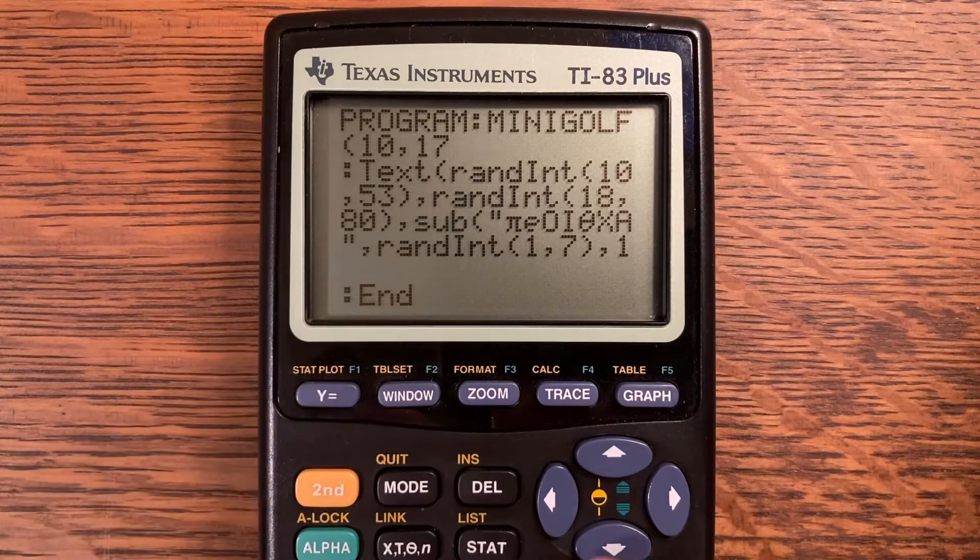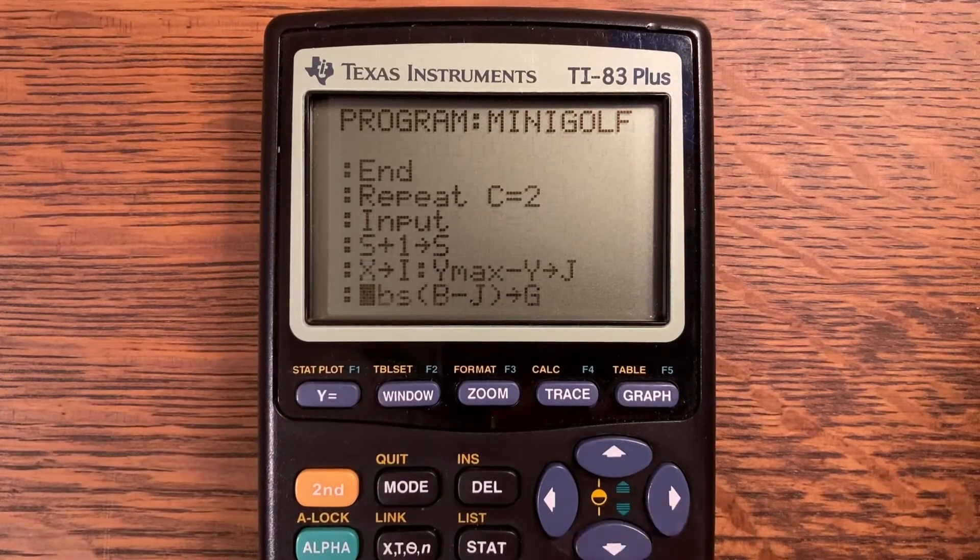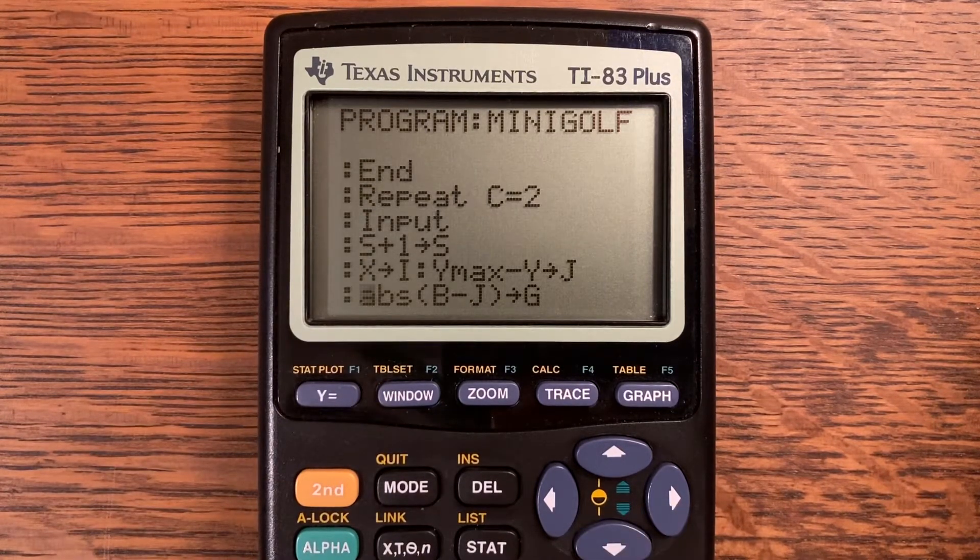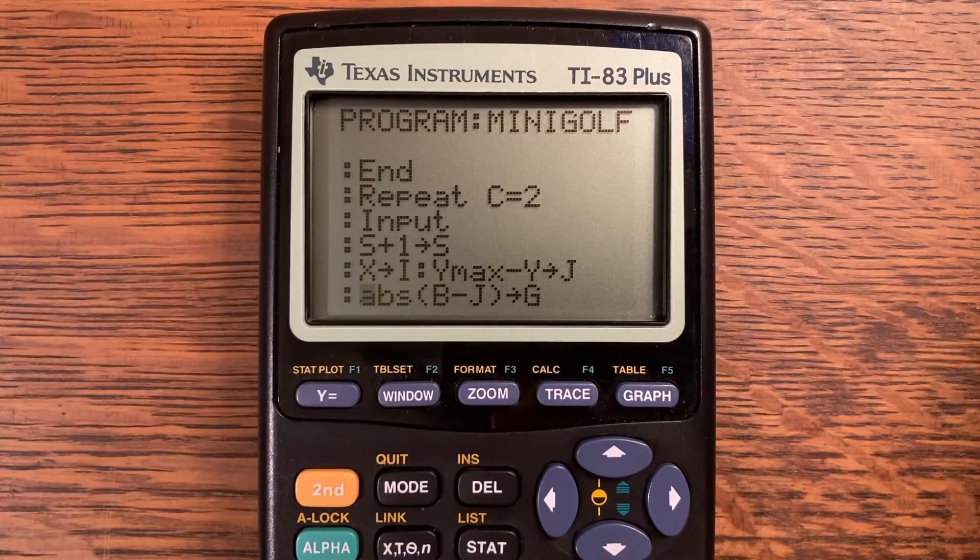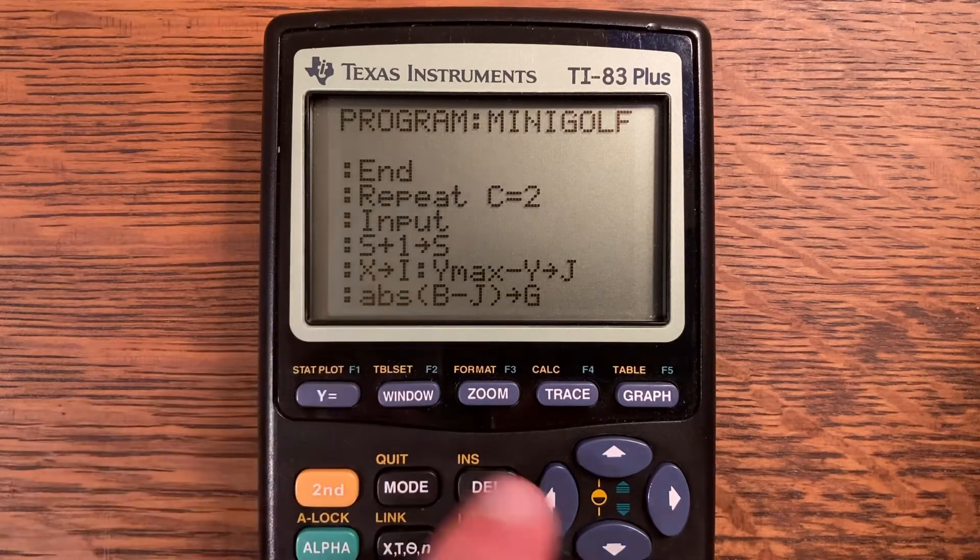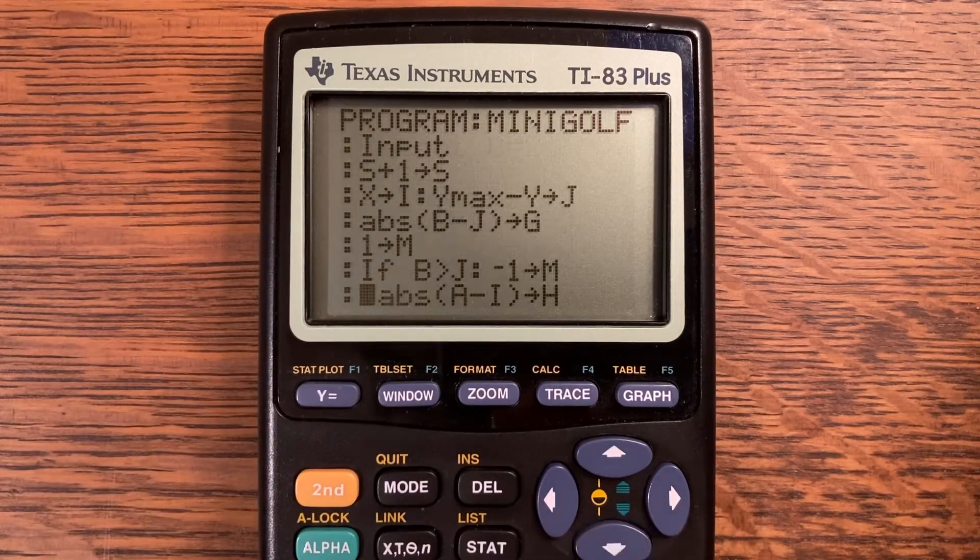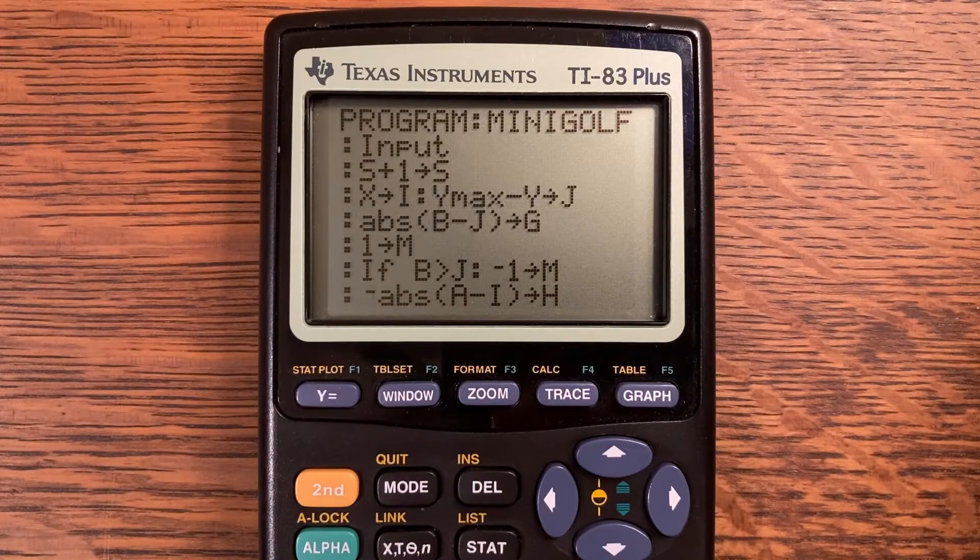And then an end for our for loop. Repeat until C is equal to 2. Input, that is the little cursor that goes around the screen when you're selecting where you want to go. S plus 1 store into S. That's our shots number which keeps track of how many shots the player has taken.